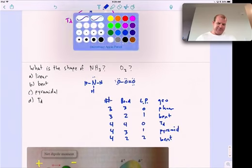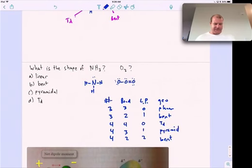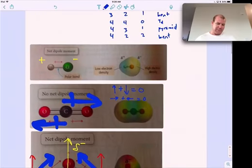Alright, so this is time for you to pause, if you want to try, what's the shape of ammonia, and I have given you the chart there. So ammonia has four things, three bonding, one lone pair, it's pyramidal. Ozone, there's a Lewis structure for ozone, it has the central atom has three things, it has two bonding, one lone pair, it's bent.